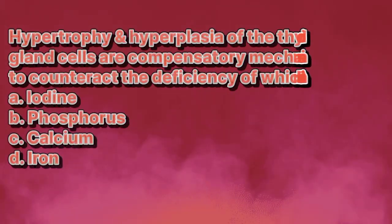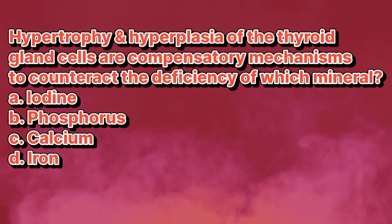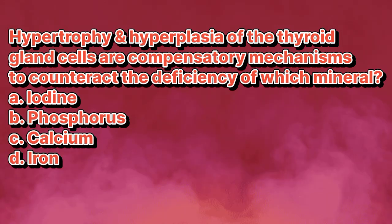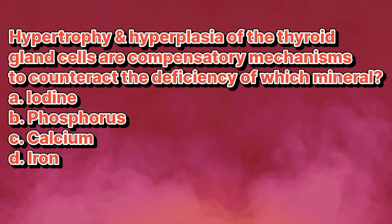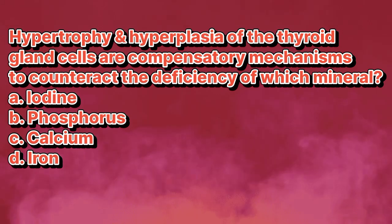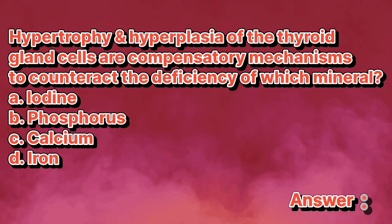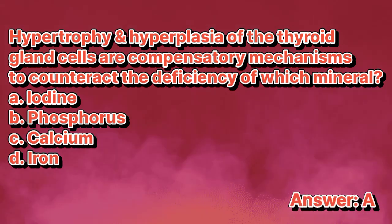Hypertrophy and hyperplasia of the thyroid gland cells are compensatory mechanisms to counteract the deficiency of which mineral? A. Iodine. B. Phosphorus. C. Calcium. D. Iron. The answer is letter A.